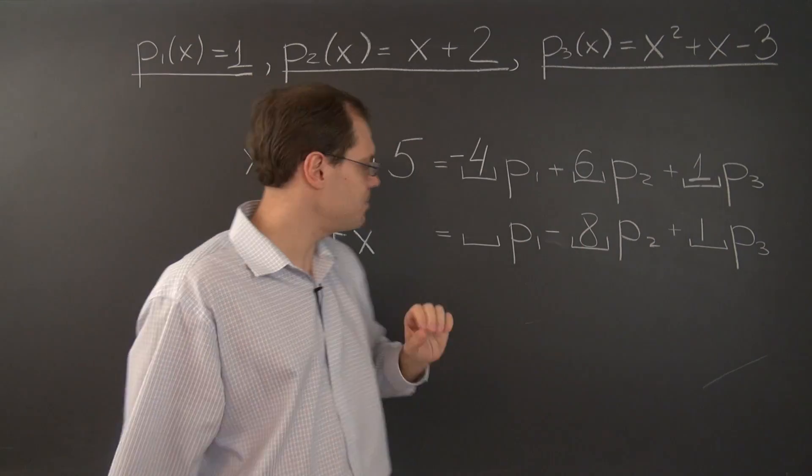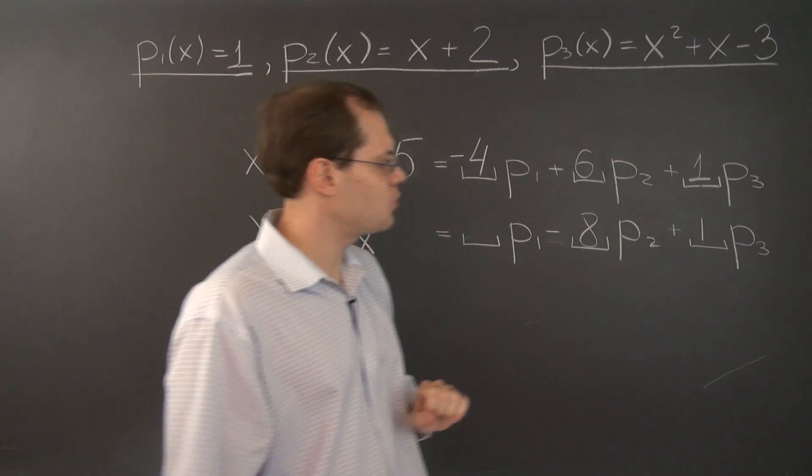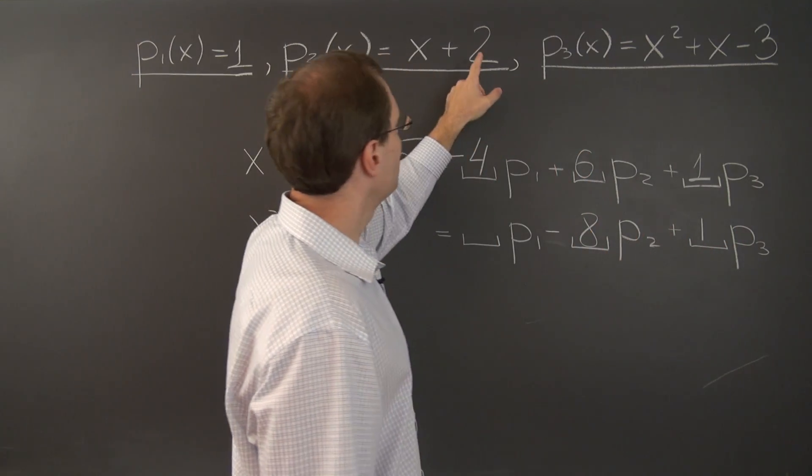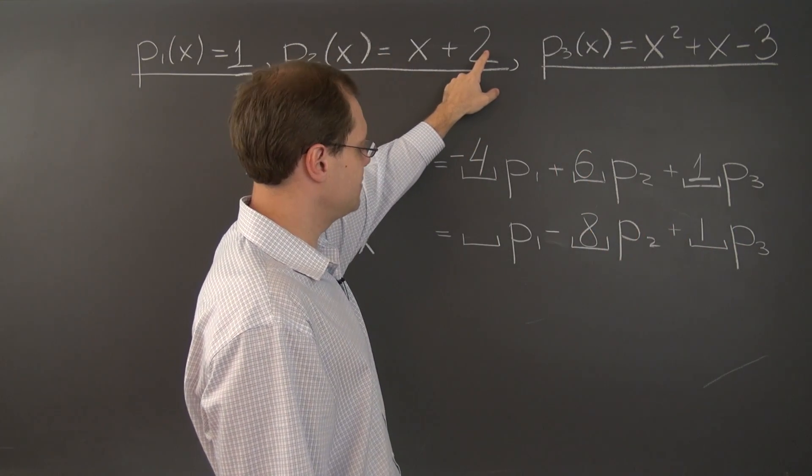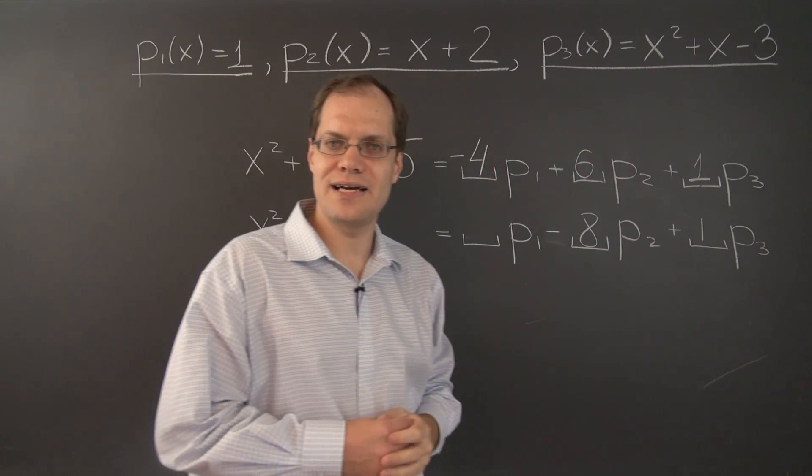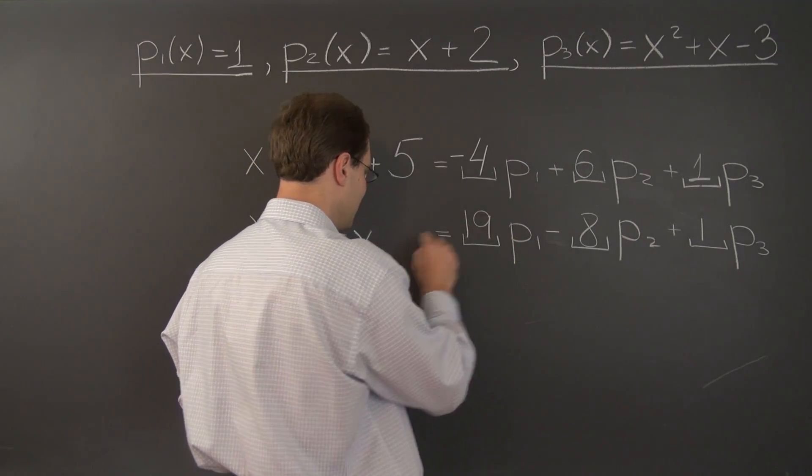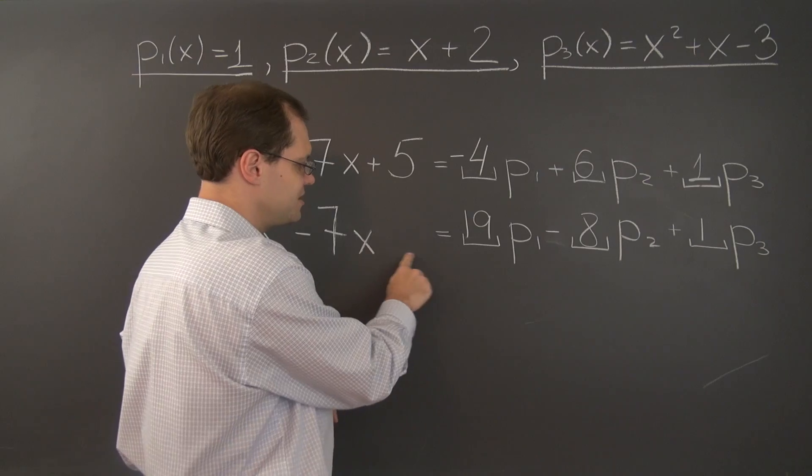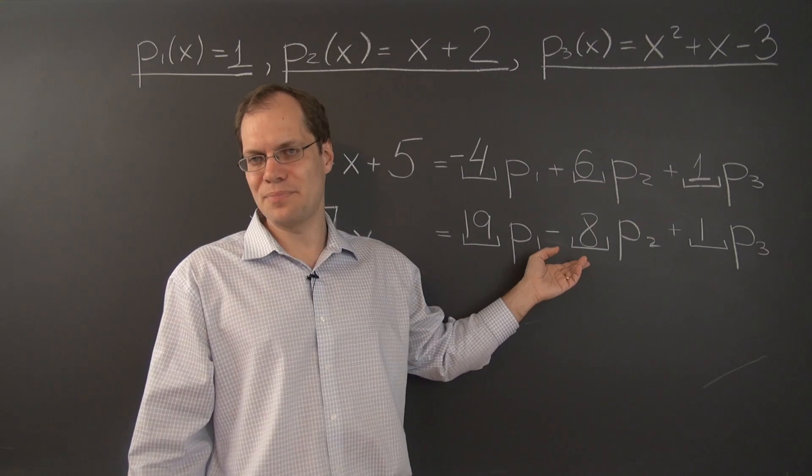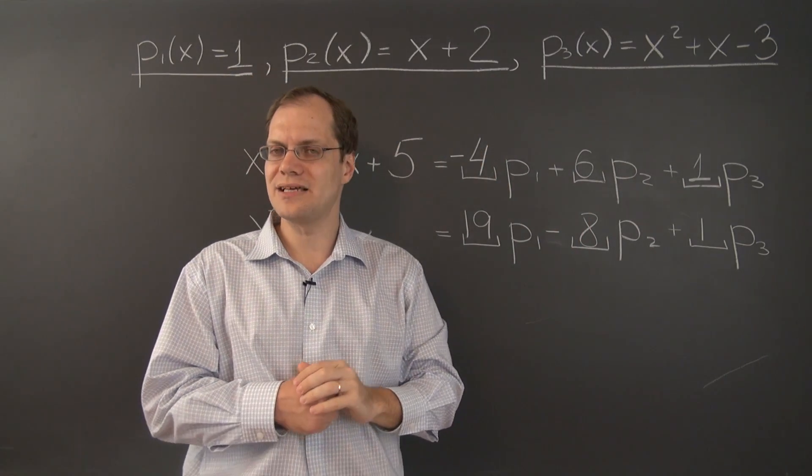And we can now match up the free term, which is 0. And let's see how much of the free term we have so far. We have a contribution of minus 3 from here and minus 16 from here. Minus 16 minus 3 is negative 19. So we actually have to take 19 of P1 in order to get to the term of 0. And there you go. We have solved our second decomposition problem with respect to this more complicated set of polynomials.